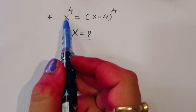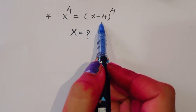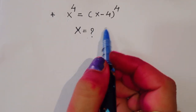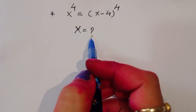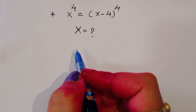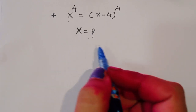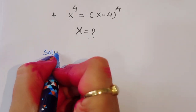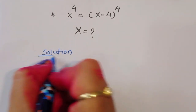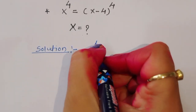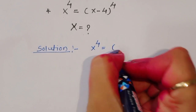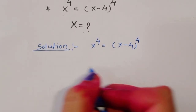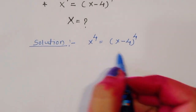The question is: given x⁴ = (x-4)⁴, we have to find out the value of x. Let's see how we can find this solution. Please ignore the color on my hand due to some traditional function. Let's start: x⁴ = (x-4)⁴.